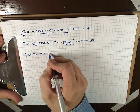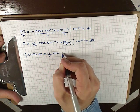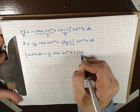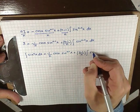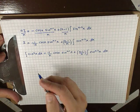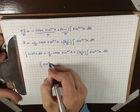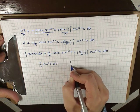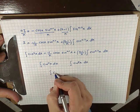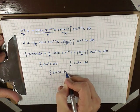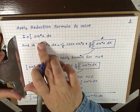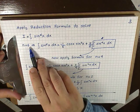Rewriting, we get: the integral of sin^n(x) dx = -1/n cos(x) sin^(n-1)(x) plus (n-1)/n times the integral of sin^(n-2)(x) dx. This reduction formula can be used to solve integrals such as sin^10(x) dx, sin^8(x) dx, or sin^4(x) dx. We're going to apply it to solve the integral of sin^6(x) dx, by plugging in n = 6.